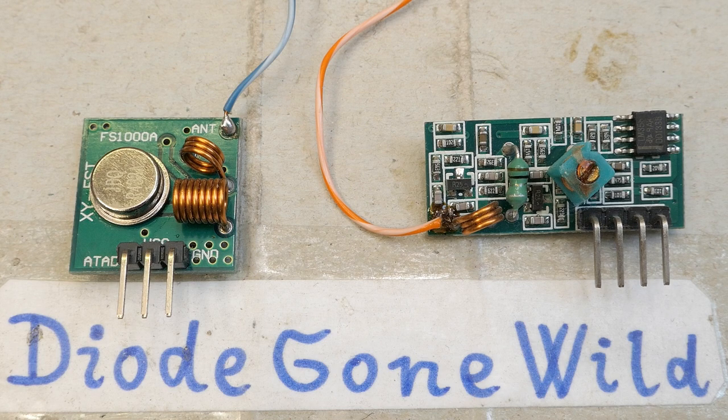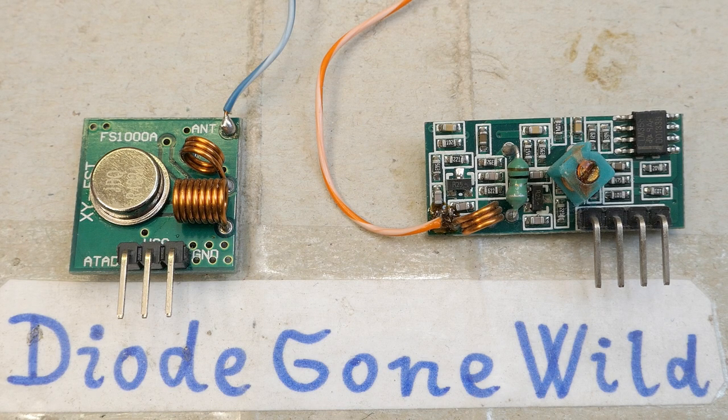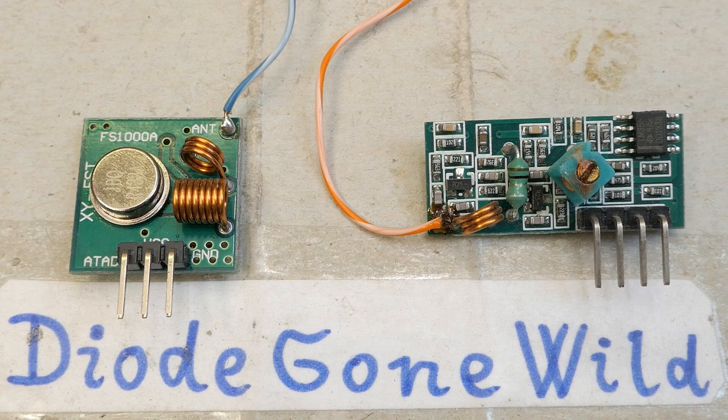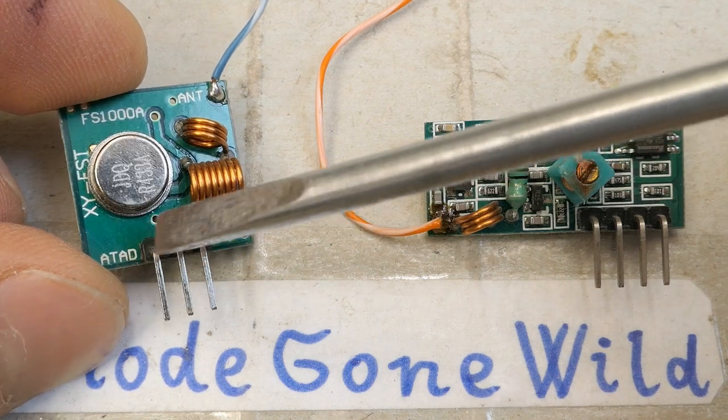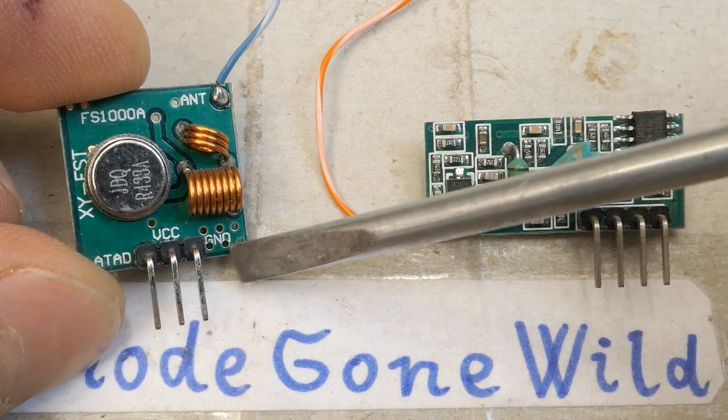These can be used for remote controls, garage door openers, wireless thermometer probes and so on. Here's the transmitter and it basically has just a ground pin, power supply pin, and the data input pin. Just three pins. It's very simple to use.